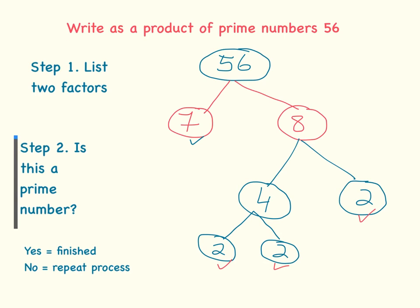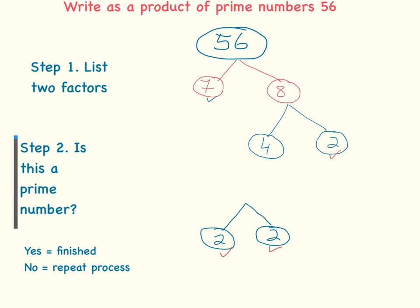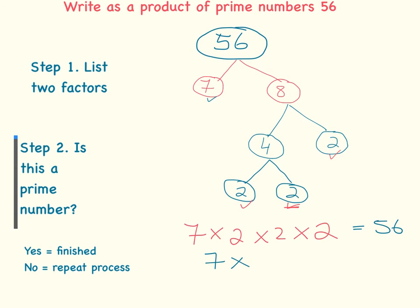Now we have to prove our answer. Writing it down as a product of prime numbers, taking the last number on all branches: 7 × 2 × 2 × 2. Are all these prime? Yes. 7×2=14, ×2=28, ×2=56 — correct! Using index notation, there are three 2s, so we can write this as 7 × 2³, which also gives 56. That's how we write the product of prime numbers using factor trees.